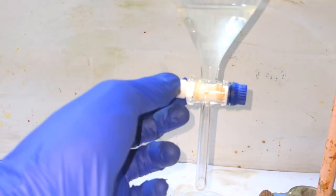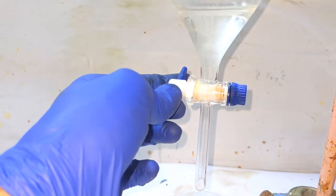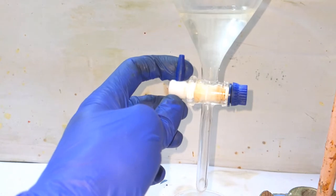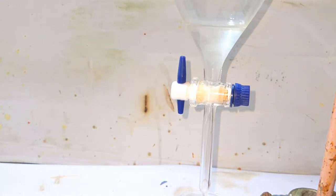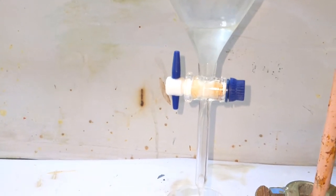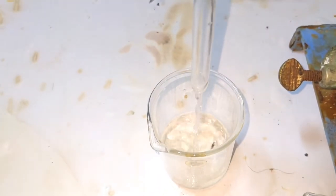Now we wash the organic layer again with some distilled water. So in total, we had three steps of washing: the first step was with distilled water, then we washed with some saturated sodium bicarbonate solution, and a third washing was given with distilled water again.